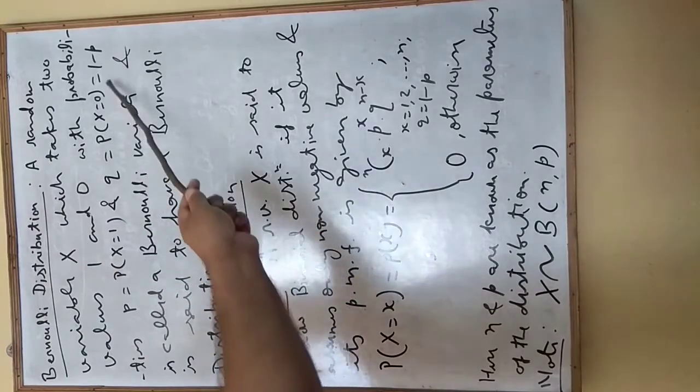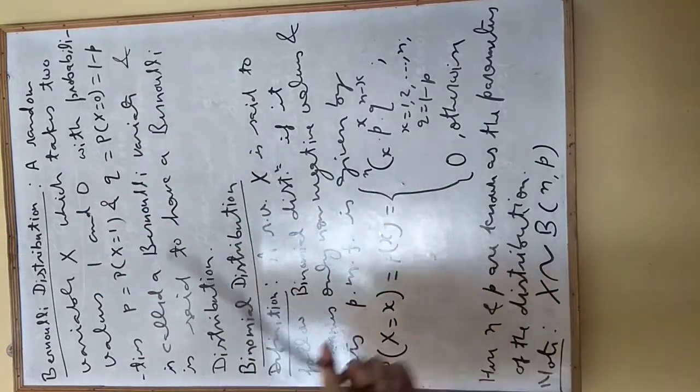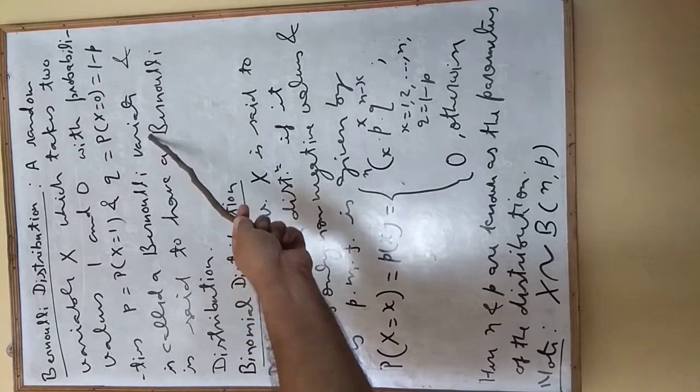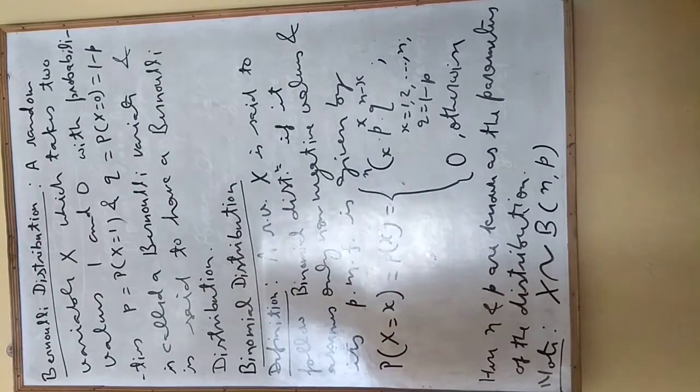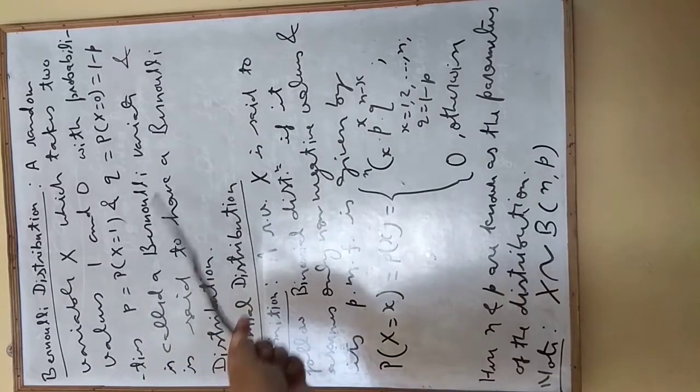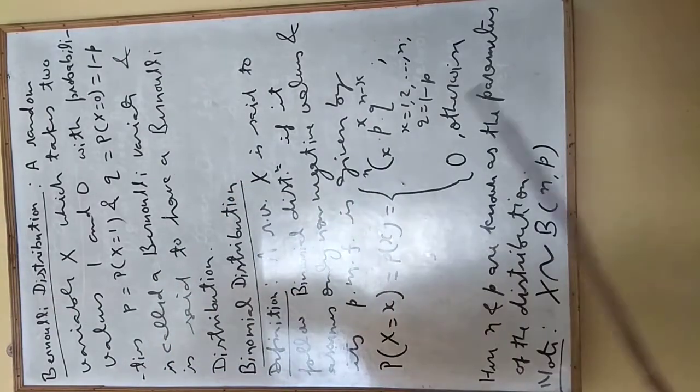Since total probability is 1, therefore q equals 1 minus p. This is called a Bernoulli variate and is said to have a Bernoulli distribution. Any variable satisfying this condition is called a Bernoulli distribution.